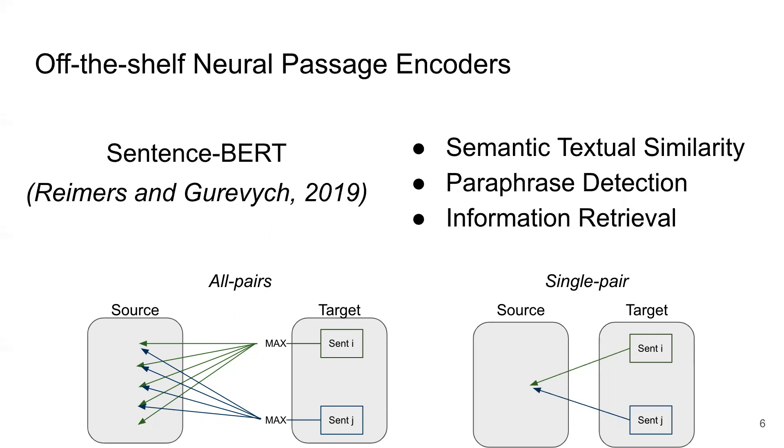For the off-the-shelf neural passage encoders, we use the state-of-the-art sentence BERT models. These are BERT-based passage encoders that have been fine-tuned on a variety of related tasks, such as semantic textual similarity, paraphrase detection, and information retrieval.